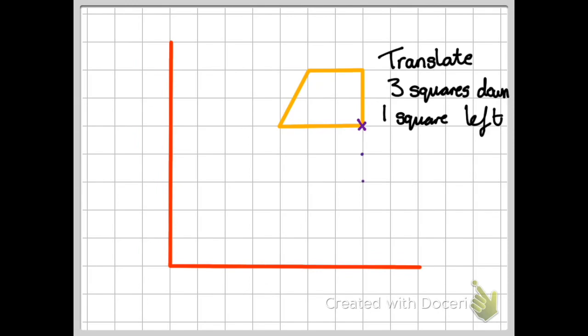I'm going to go one, two, three down and one to the left. And that's where the new vertex will be after it's been translated. Then I'm going to find another vertex. So here's one. I'm going to go three down, one, two, three again and one to the left.